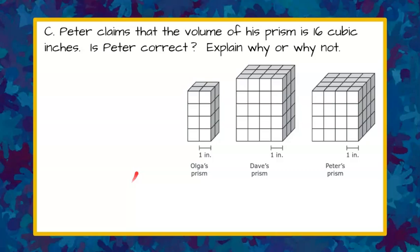Here's part C. Peter claims that the volume of his prism is 16 cubic inches. Is Peter correct? Explain why or why not. Please pause and solve part C now.